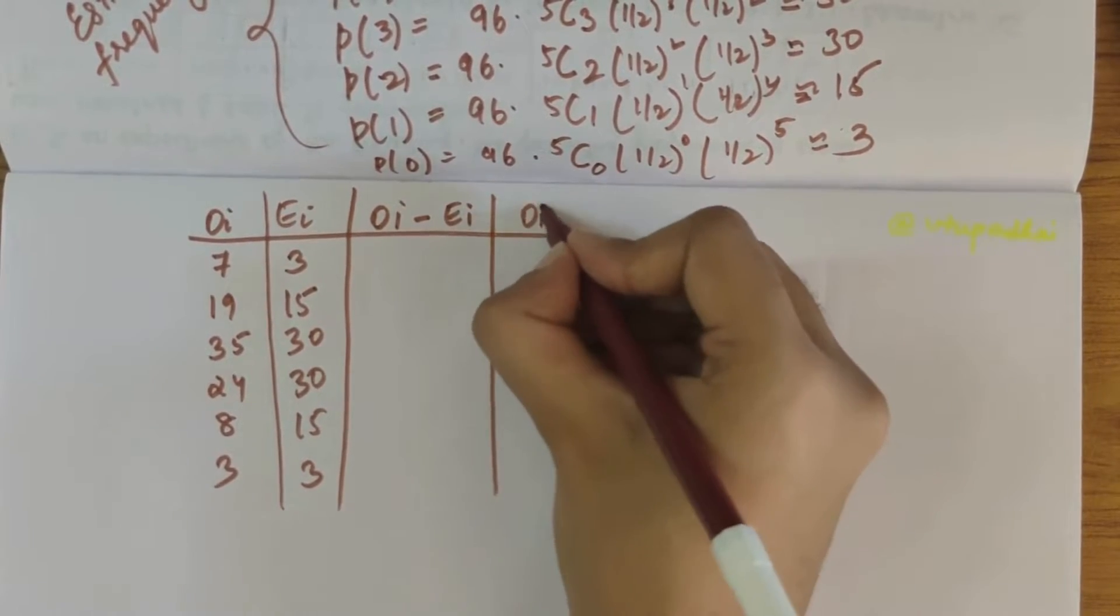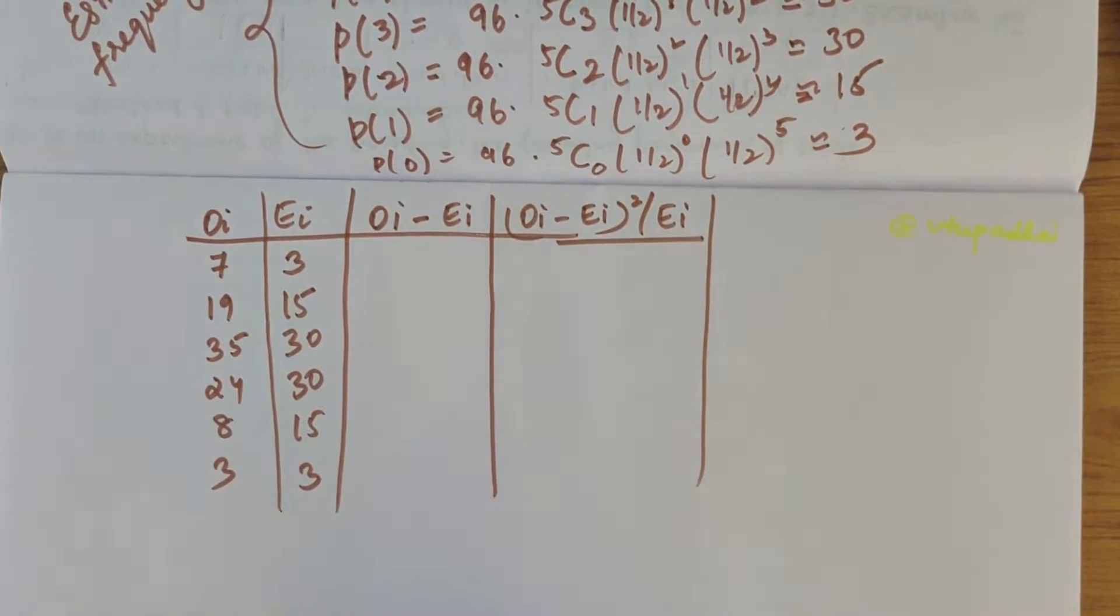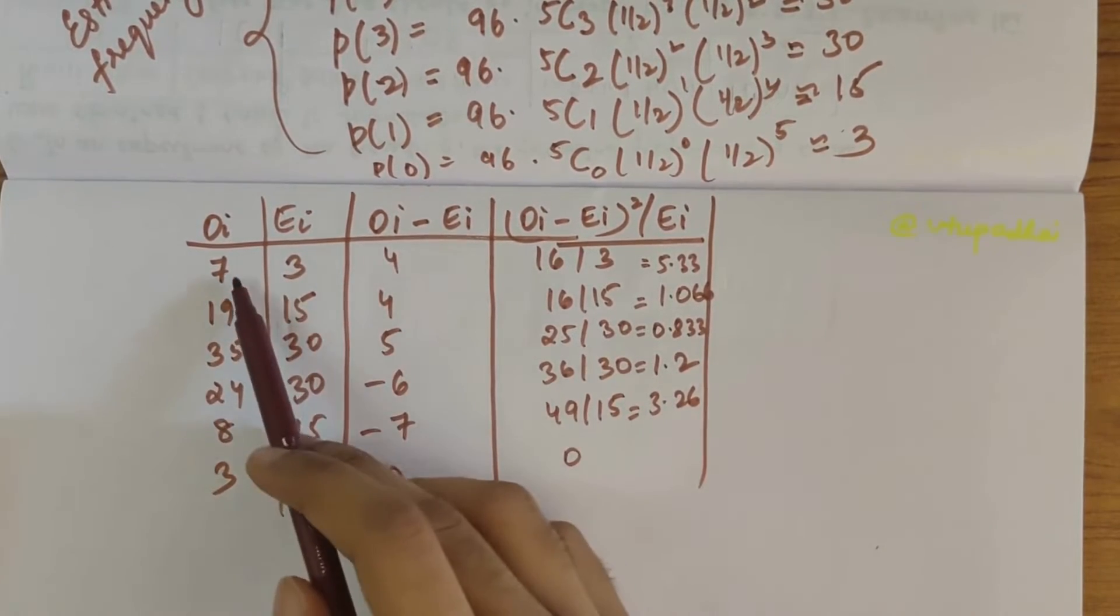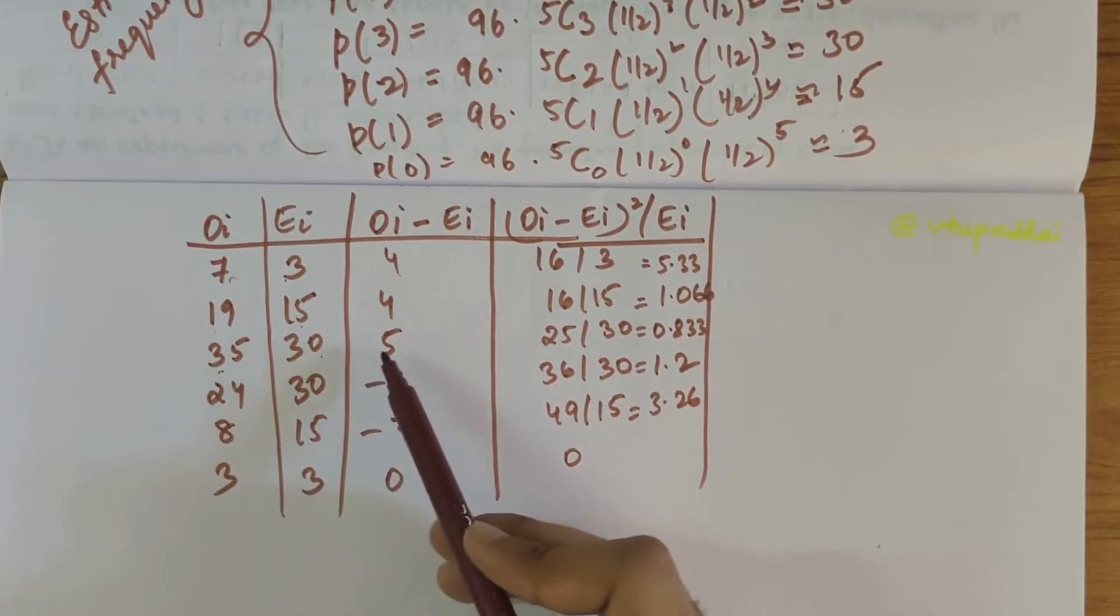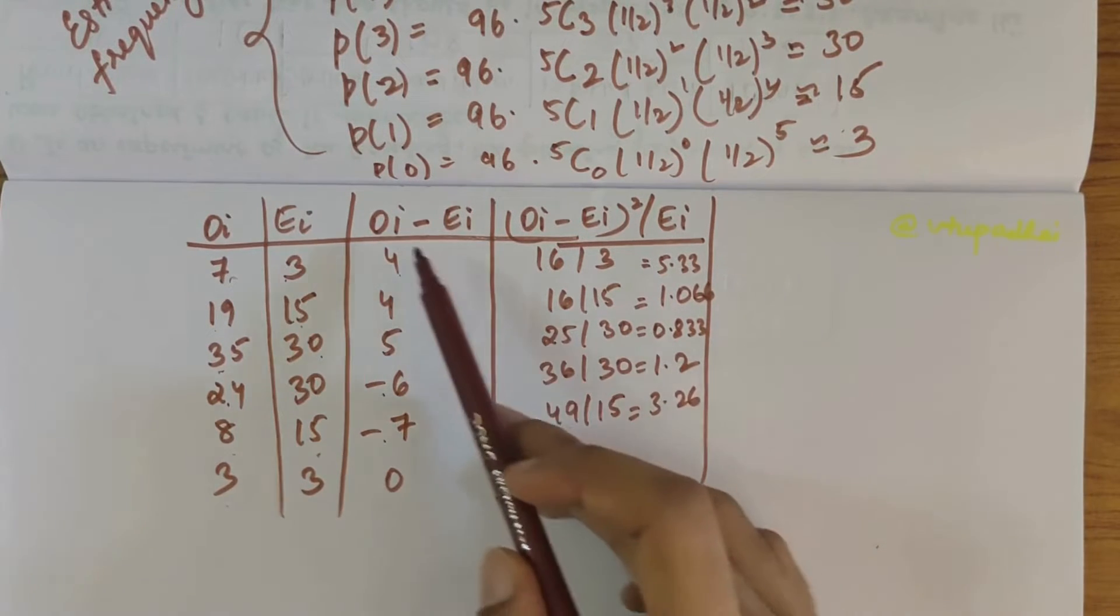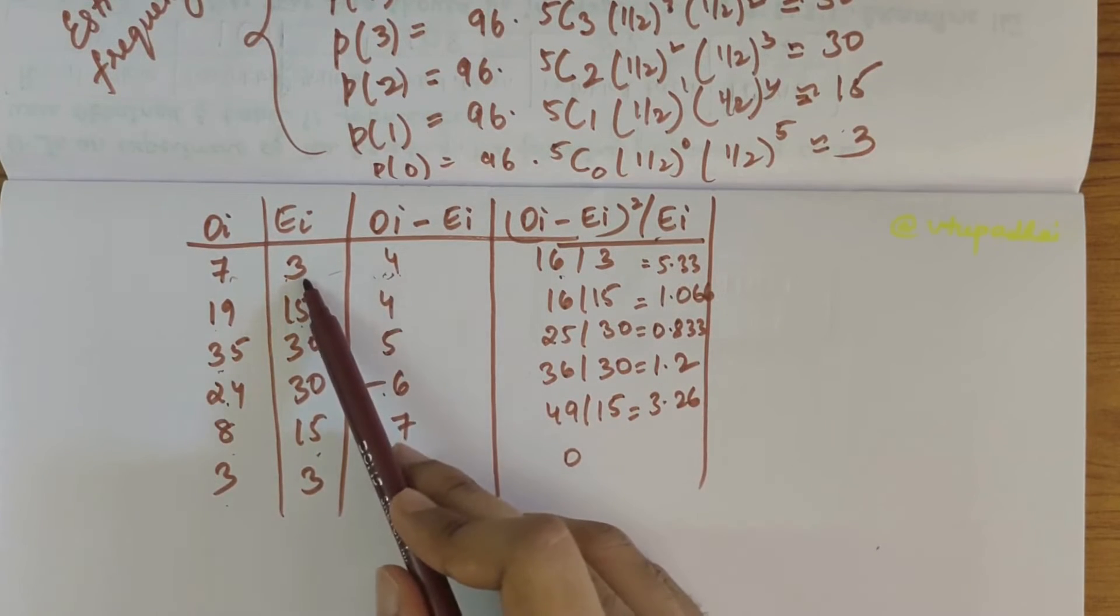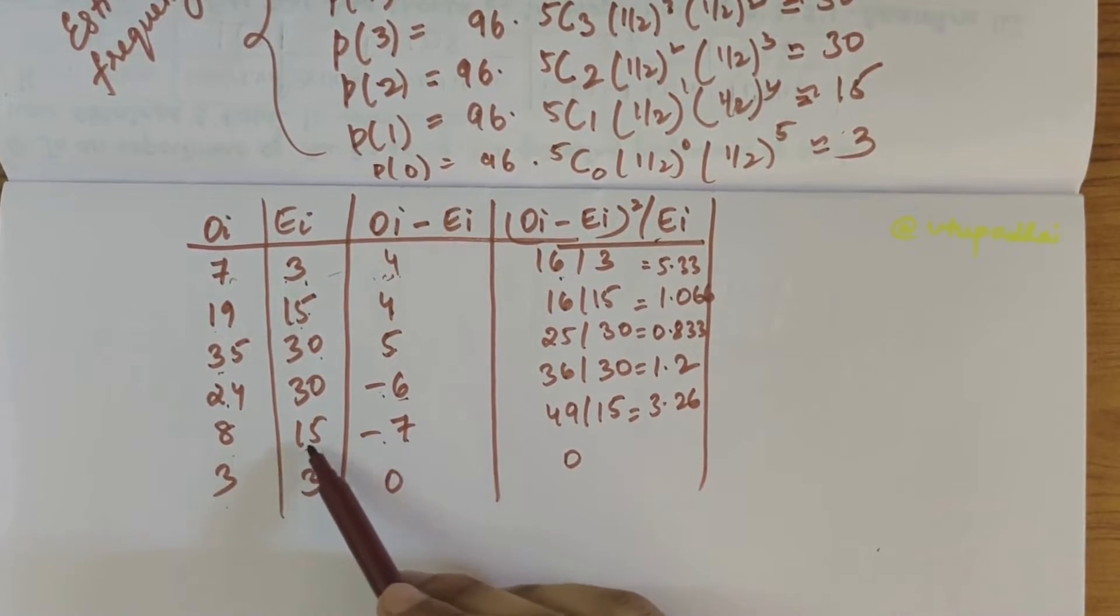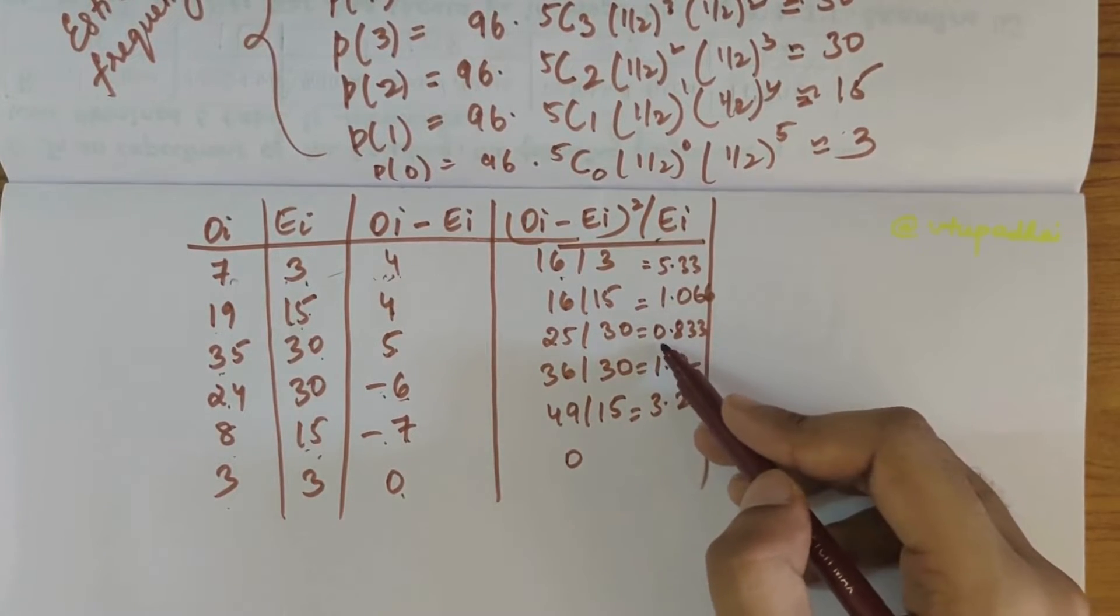So solving this we get 7 minus 3 is 4, 19 minus 15 is 4, 35 minus 30 is 5, 24 minus 30 is minus 6, 8 minus 15 is minus 7, and 3 minus 3 is 0. Now squaring this and dividing it with Ei: 4 squared is 16 by 3, then 16 by 15, then 25 by 30, then 36 by 30, 49 by 15, and 0. Solving this you get 5.33, 1.066, 0.833, 1.2, and 3.26.